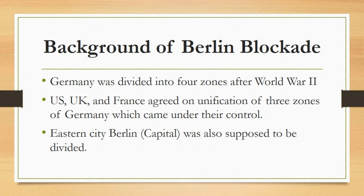Being the capital city of Germany, Berlin was also supposed to be divided among the four powers, including the United States, UK, France and the USSR. As it is situated on the eastern side, Berlin and all the territory along it was in the control of the USSR after the division of Germany. But the USSR had to give West Berlin to the US, UK and France.